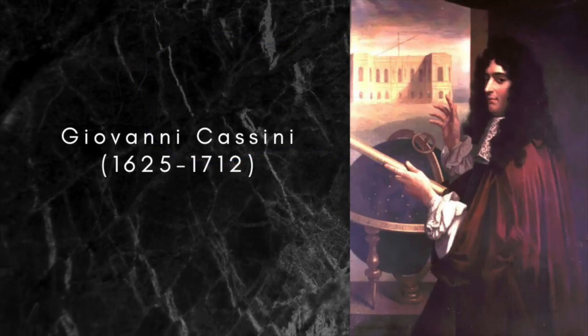The Cassini ovals are named after the Italian born astronomer Giovanni Cassini, who first investigated them in 1680 while studying the relative motions of the Earth and the Sun.